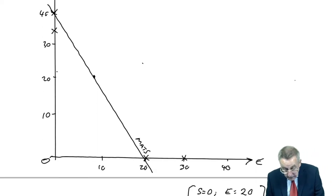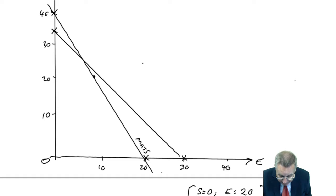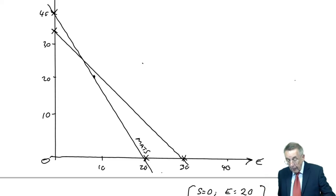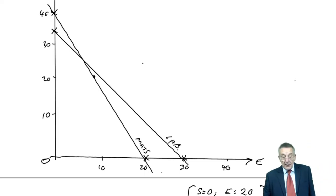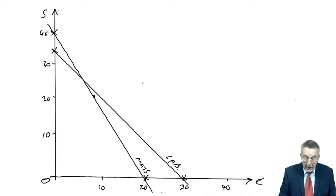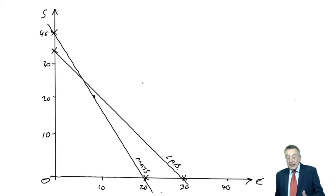Join them up. Not perfectly still. But there is our labour constraint. And in a similar way to materials, any answer we end up with, S and E will either have to lie on the line or be below it to be using less than 180.